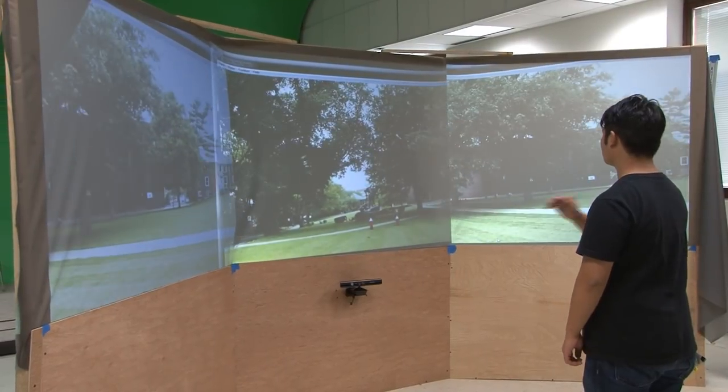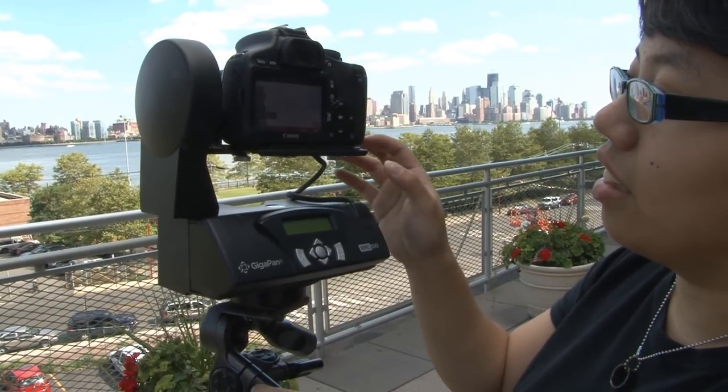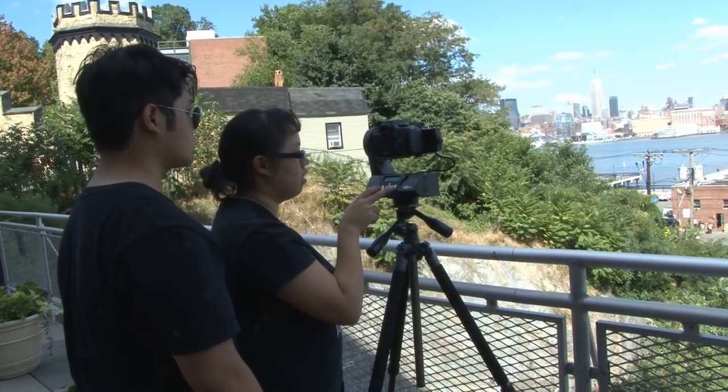We're taking gigapixel images, so they're really high-definition images, and we're using an Xbox Kinect to track a viewer so that they can zoom in and out and pan around the scene using their hands. We have a gigapan robot, and essentially we can mount the camera on it and on a tripod, pick some points that we want to start and end, and the robot will take the pictures for us.